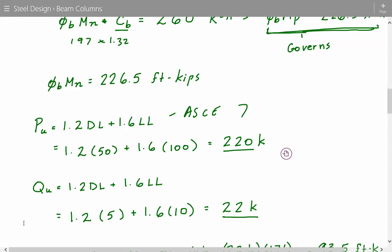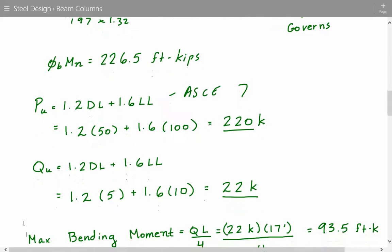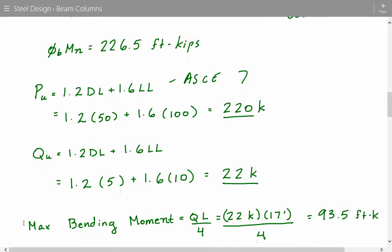So we have our factored axial load, factored transverse load, and now we have to get the maximum bending moment. Based on the loading condition, the maximum bending moment will be QL divided by 4. So 22 kips times 17 feet divided by 4. This gives us 93.5 ft-k.